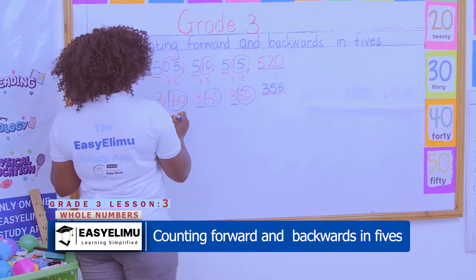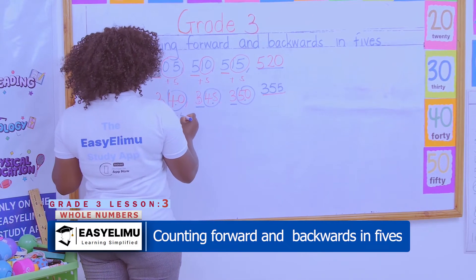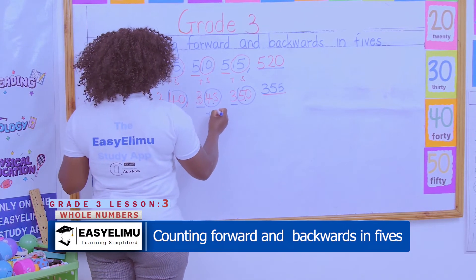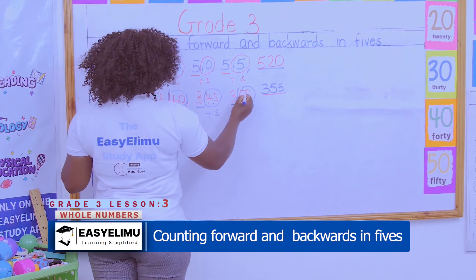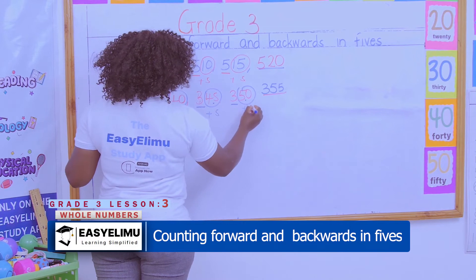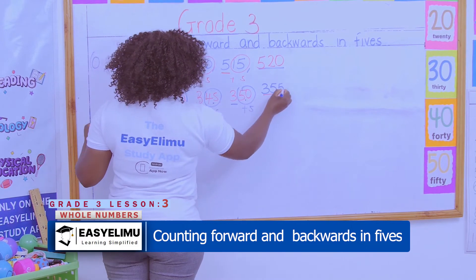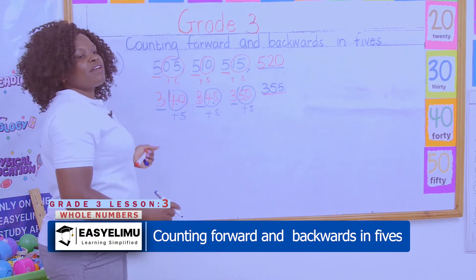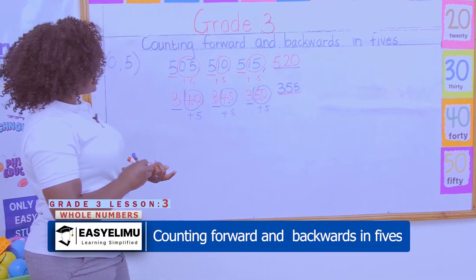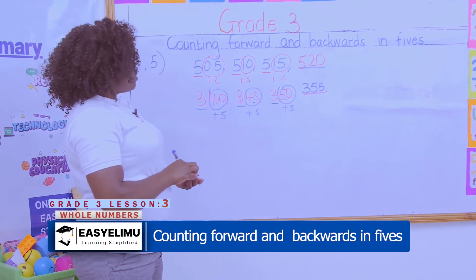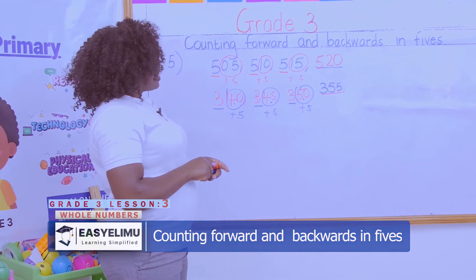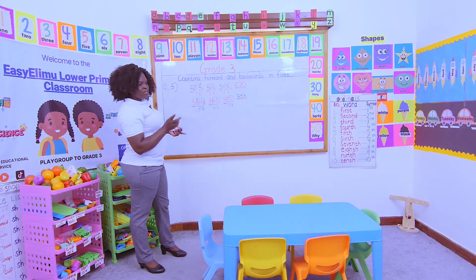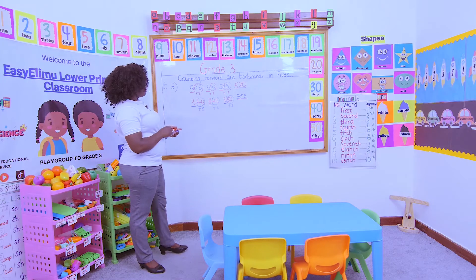Alternatively, you can decide to add 5 to get 45, add 5 to get 50, add 5 to get 55. And that is how you do it — counting in fives forward. What about backward?